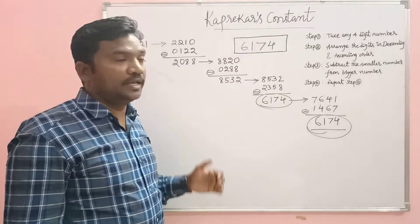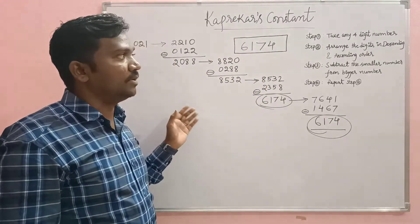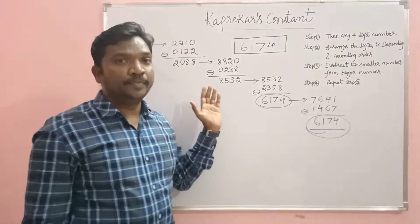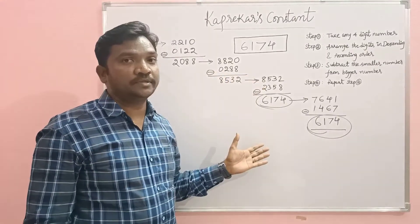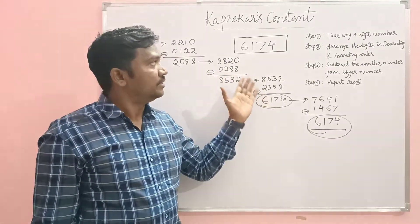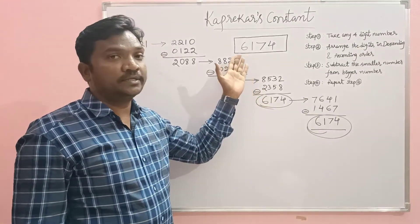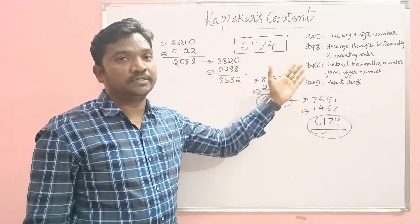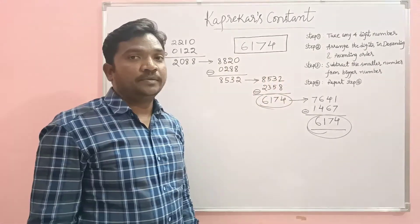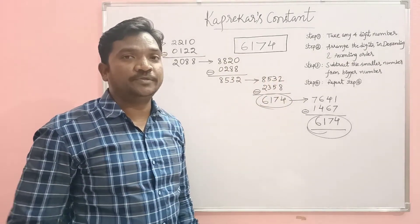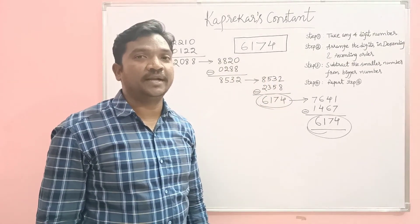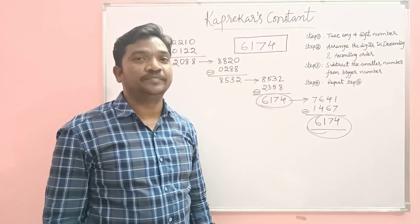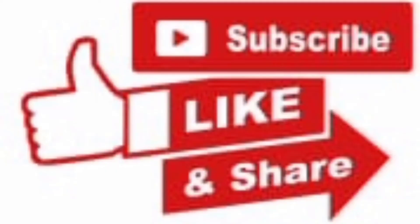If you take any four-digit number and do the same process, you can get 6174. If you like this video, please like, share, and subscribe. Thank you.